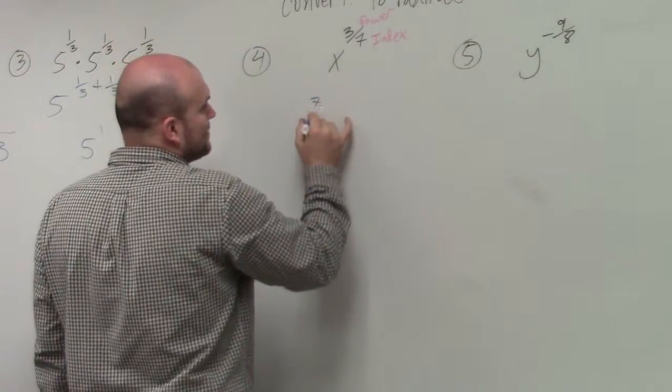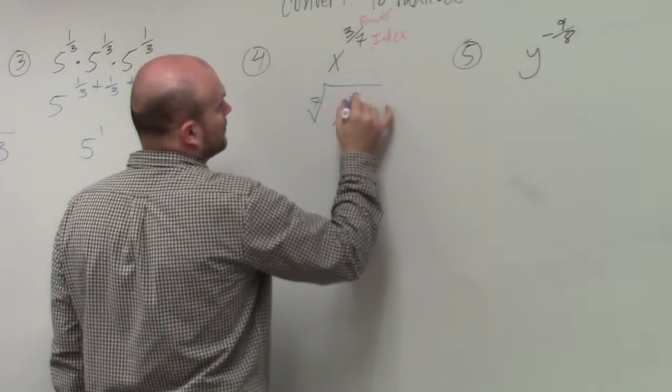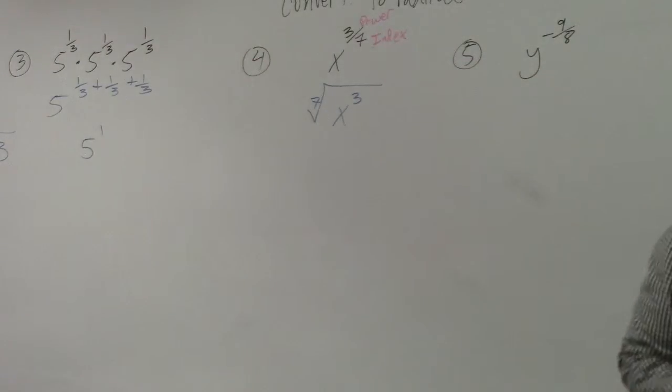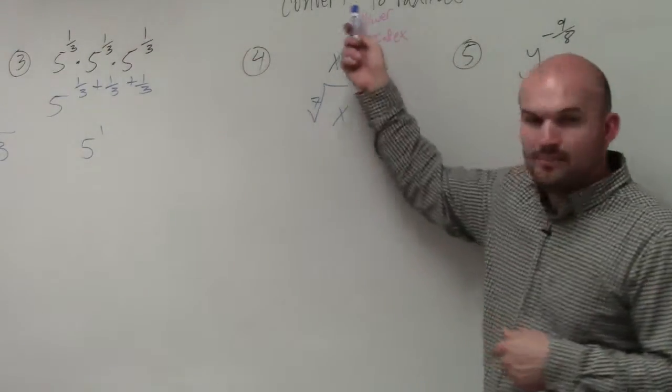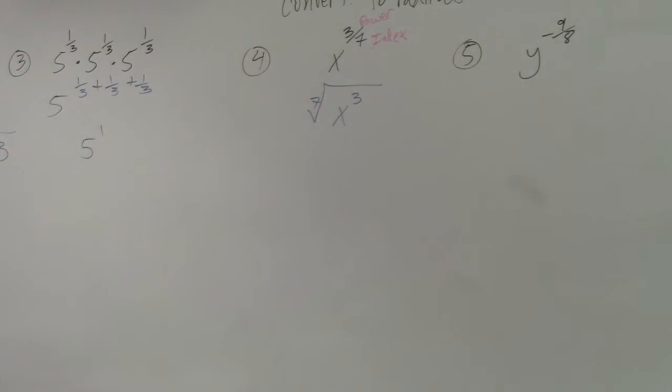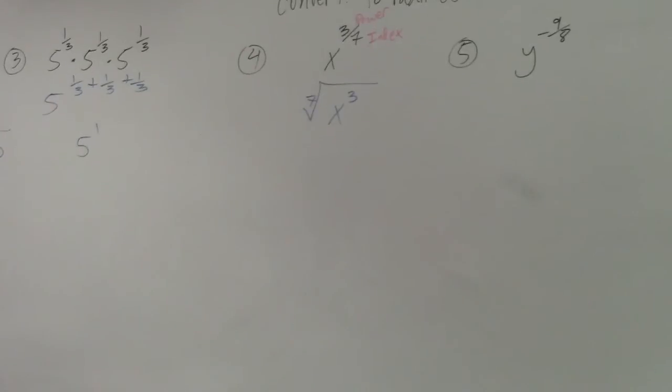So if that's my index, this would look like this. So it's the 7th root of x to the 3rd power - power over index. Okay? Just a helpful way for you guys to rewrite them. That was it.